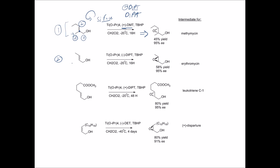In example two: priority one goes to the carbon with oxygen, priority two to the next carbon, and priority three to hydrogen. Again this is the Si-face. Now we're using minus diisopropyl tartrate (−DIPT), and minus attacks from the Si-face. The face you're watching from is the Si-face — above the plane — so the epoxide is formed above the plane.